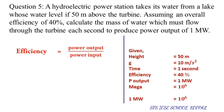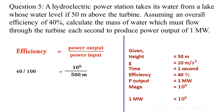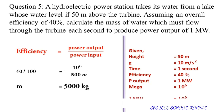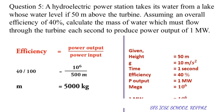Substituting the values in the formula: efficiency equals power output divided by power input. So 40 divided by 100 equals 10 raised to power 6 watts divided by 500m. Solving for m: m equals 10 raised to power 6 into 100, divided by 500 into 40. We get the answer for m as 5000 kg.